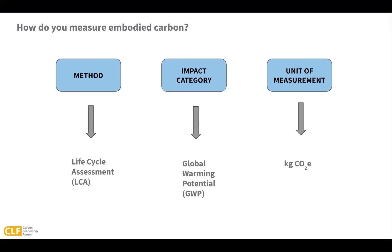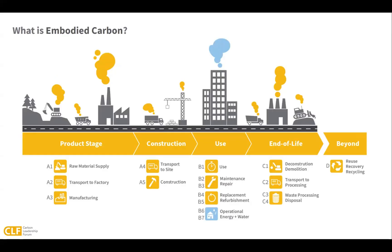Let's take a look at when embodied carbon emissions occur over the life cycle of a building project. This graphic shows embodied carbon impacts of a building using the life cycle approach from left to right to represent time. We can see that greenhouse gas emissions that contribute to embodied carbon, shown in gold, are generated during raw material supply, transport, and manufacturing of construction products. Emissions are also generated through material transport and the actual construction process itself. During the use phase of a building, maintenance, repair, and replacement of materials also contributes to embodied carbon.